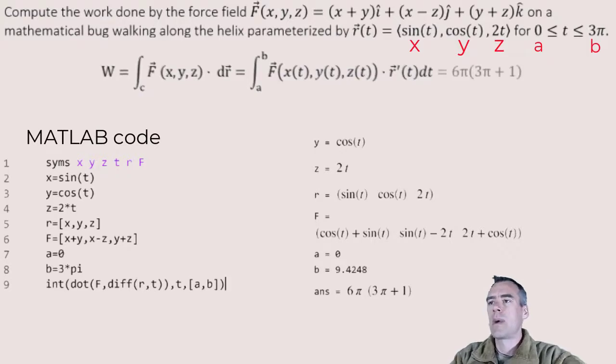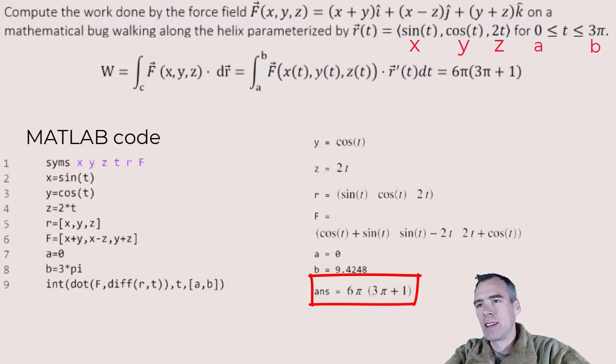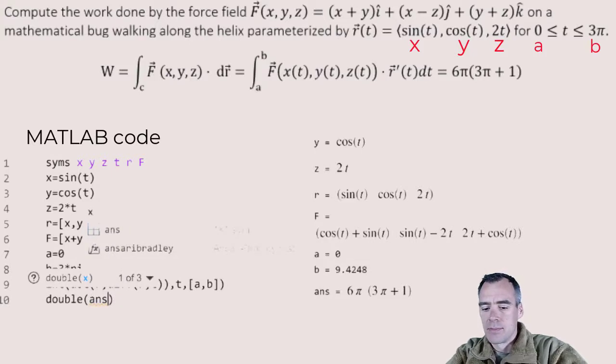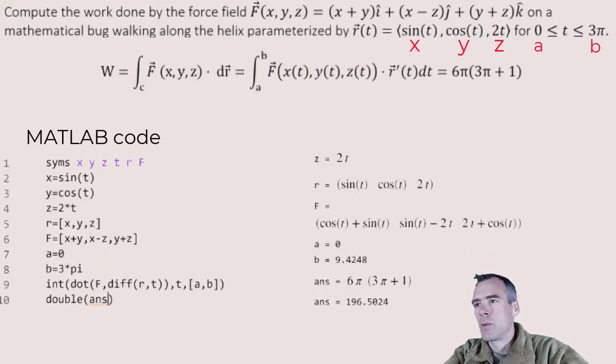And we get 6π times 3π plus 1 quantity. And if you're like me, that expression doesn't immediately give you a number popped in your head. So let's go ahead and take the double of that. And we'll get a decimal. That decimal being 196.5. And that's it. Bam. Super easy.